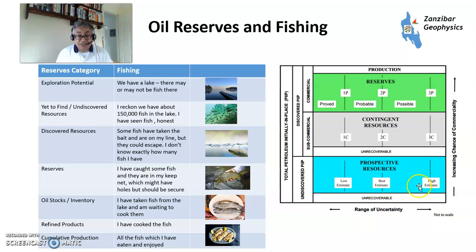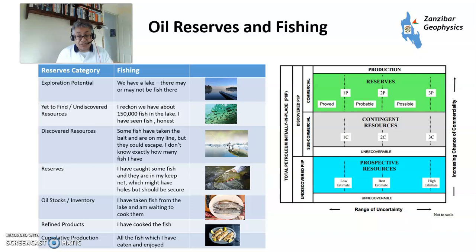For contingent resources: 1C is what you've demonstrated to guarantee exists, 2C is what you probably think is there, and 3C is what might be there. Then there are prospective resources — things that might be there, concepts and ideas. To use a fishing analogy: a lake might have some fish in it — that's Antarctic-level potential. The Korean example is like saying 'I reckon there might be 150,000 fish in the lake, I've seen some fish.' Discovered resources are fish that have taken the bait but could still escape. Reserves are fish in the keep net. Products are fish you've cooked. Production is fish you've eaten.